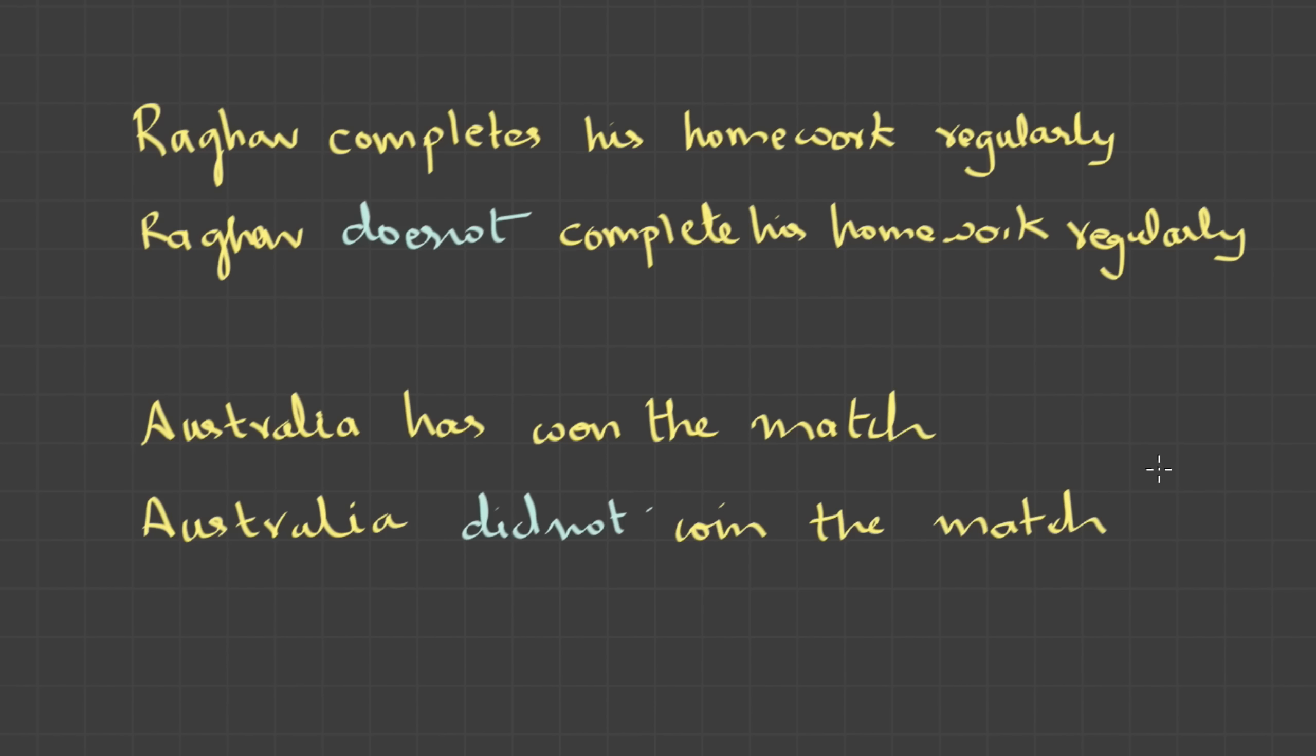To keep it simple and minimal, we shall use a standard prefix line that can do the same job. And the line is, it's not the case that followed by the statement. Let's try with these statements. If I have to negate it, I could say, it's not the case that Raghav completes his homework. Or, it's not the case that Australia has won the match. Perfect. So, let me introduce the first transformational operator, negate. And this is the symbol we're gonna use.